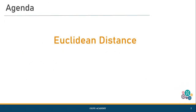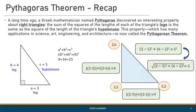Let us talk about Euclidean distance, but before we move on, let us recap Pythagoras theorem. We have seen in school what Pythagoras theorem is about — in a right angle triangle, the sum of the squares of the two legs equals the square of the hypotenuse.